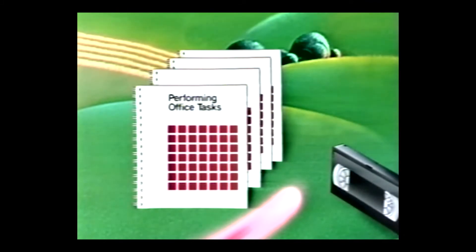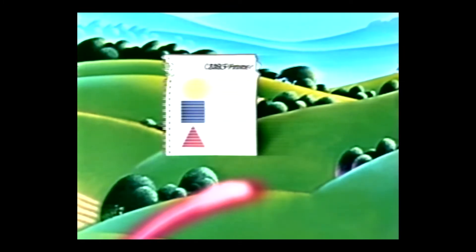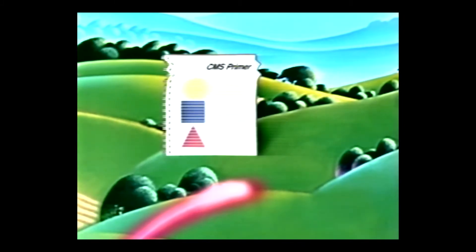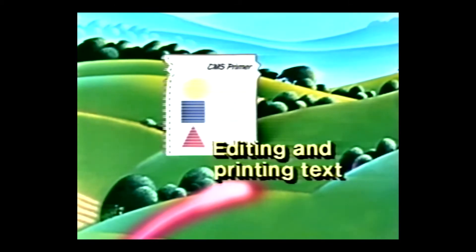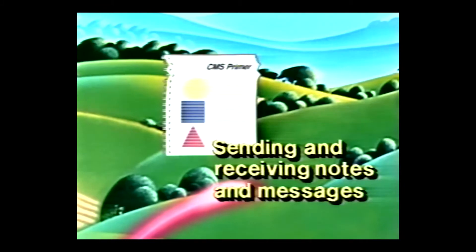Each of the Learning to Use Your System books prepares you for using other more detailed books, where you will find a full explanation of how to use the optional features installed on your VMIS system. Next, turn to the CMS Primer, which teaches users about some topics of general interest regardless of their specific job assignment. The CMS Primer will show you, step by step, how to perform some very basic daily tasks like editing and printing text, and sending and receiving notes and messages.